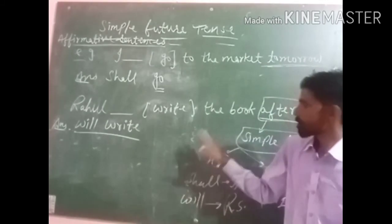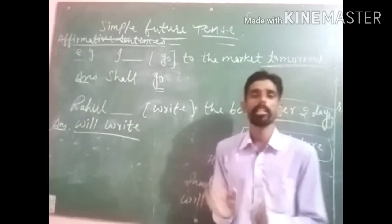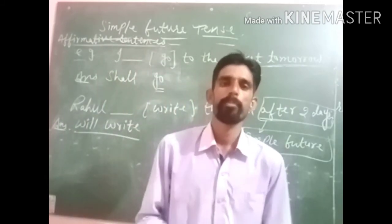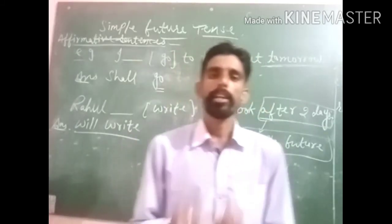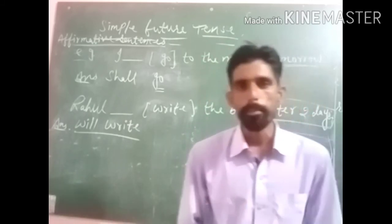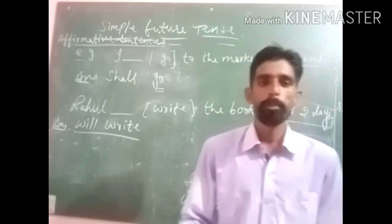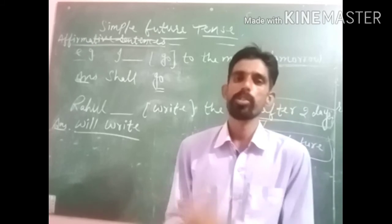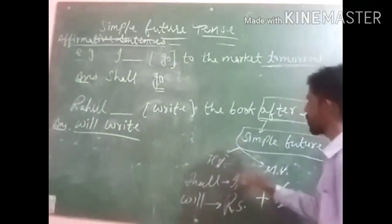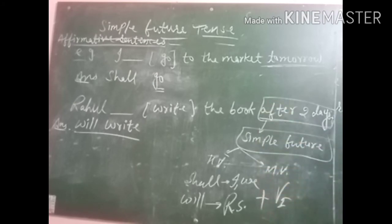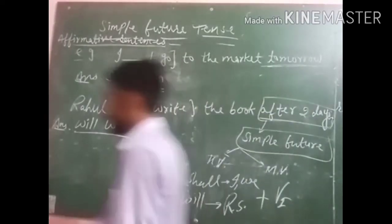This is the approach: first identify the time adverb in the given sentence. After identifying the time adverb, we can easily identify the tense — and this is only possible if you have learnt all the time adverbs of all the tenses. If you learn all the time adverbs, your burden of learning tenses is reduced by 50%. After that, use helping verb plus main verb.